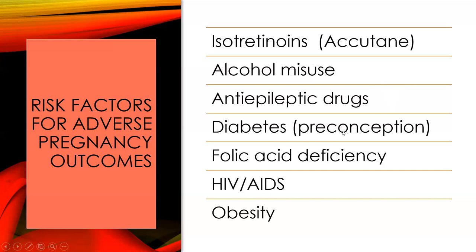Diabetes preconception — meaning they have diabetes before they get pregnant — is going to affect the pregnancy. A folic acid deficiency can increase neural tube issues. HIV or AIDS and obesity are also risk factors. Obesity is fast becoming one of the biggest issues we see in pregnancy.